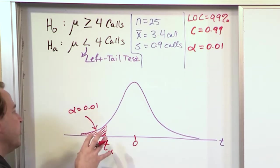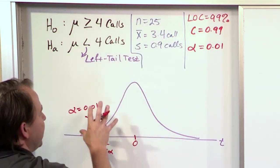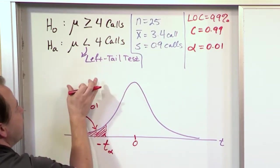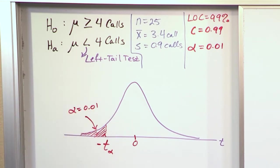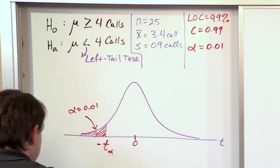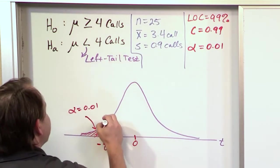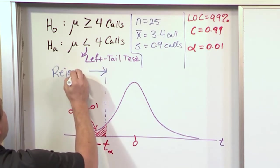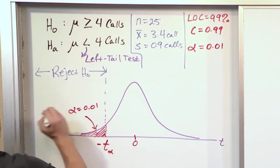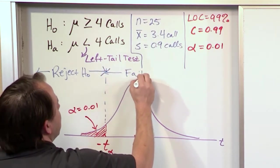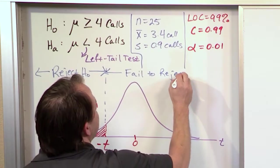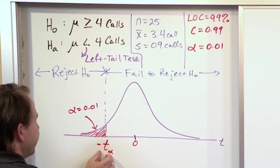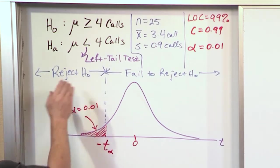We've drawn the picture graphically to show what we're doing. If we get anywhere into the shaded region on the left, we will be rejecting the null hypothesis. Anything outside that region, we fail to reject the null hypothesis. Now we're in a position to figure out the threshold value that determines our rejection region.